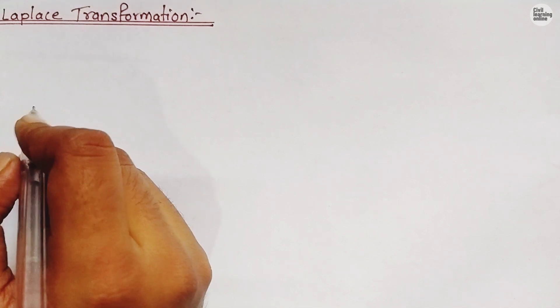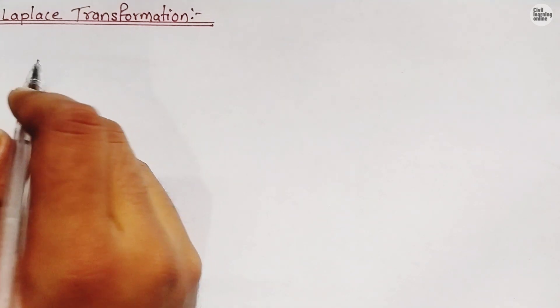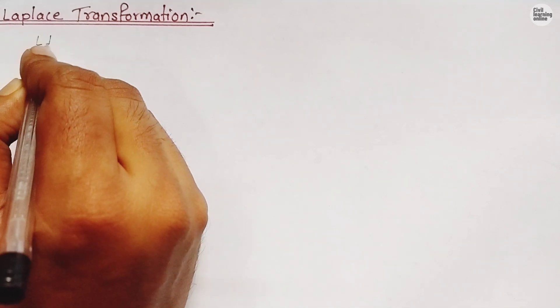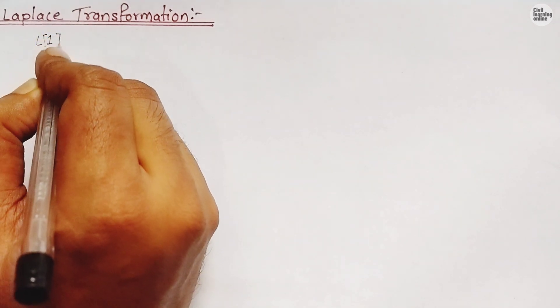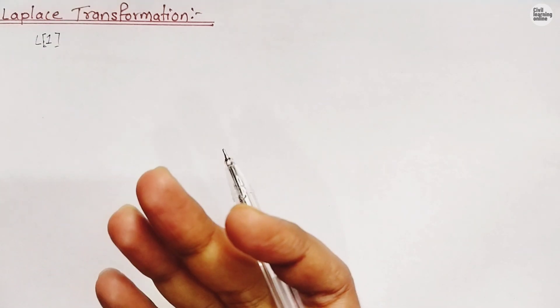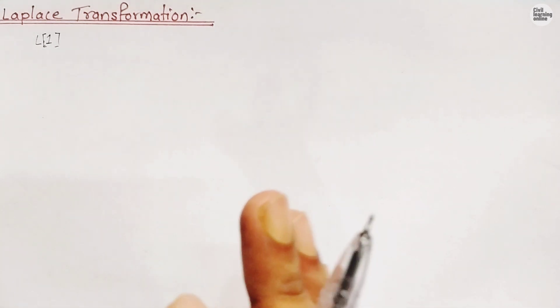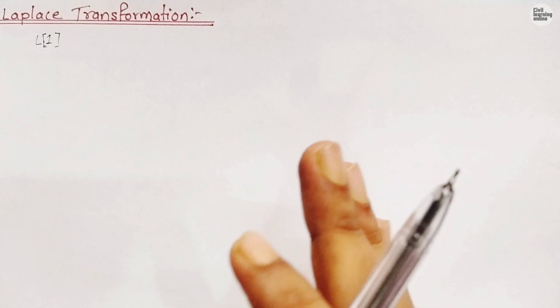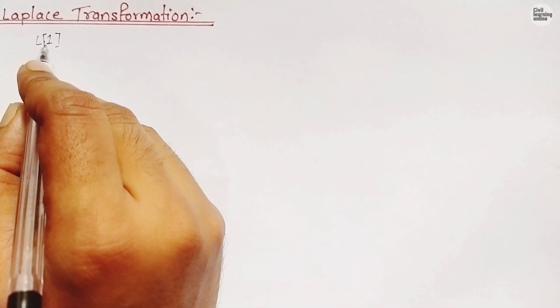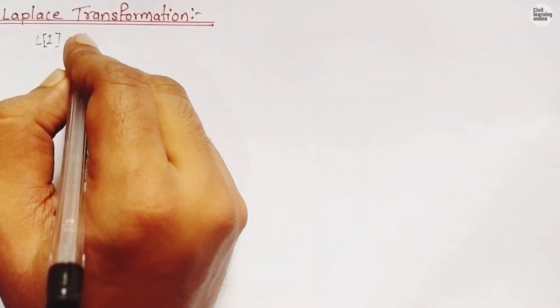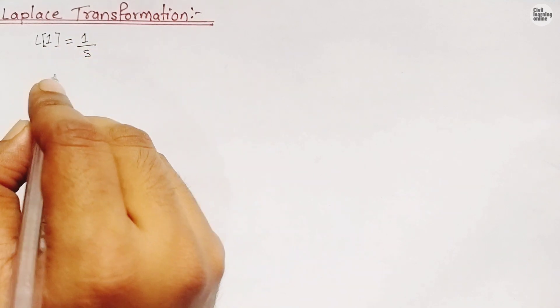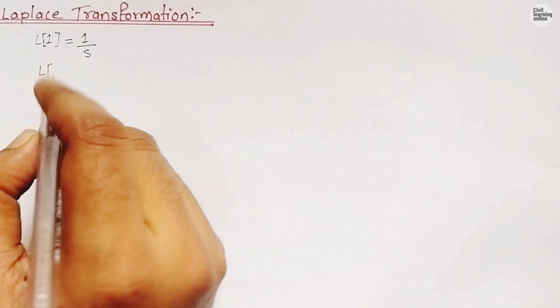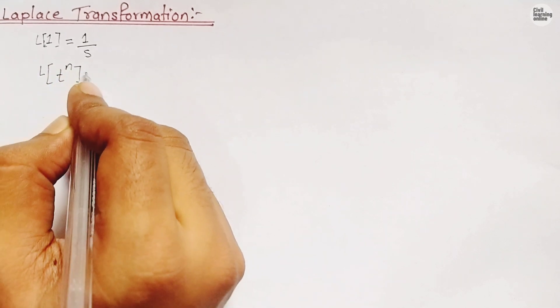The first formula in Laplace transformation: L represents Laplace transformation. In later lectures we will also discuss the definition of Laplace transformation and numericals based on that definition. For now, since this is lecture one, we start with the basics. The Laplace transformation of 1 is 1/s. Similarly, the Laplace transformation of t^n is n! / s^(n+1).